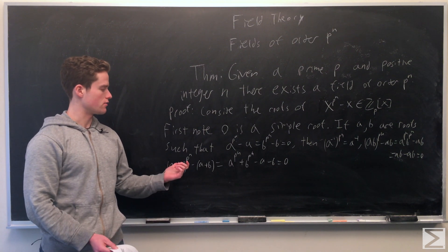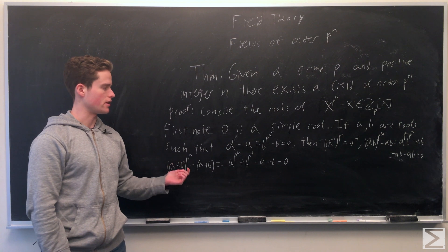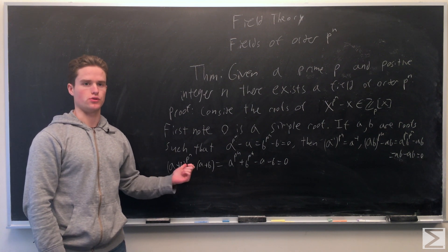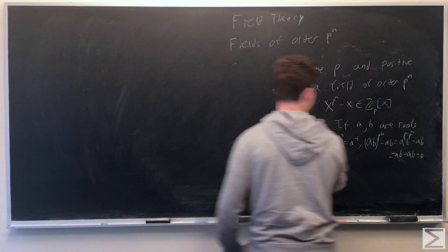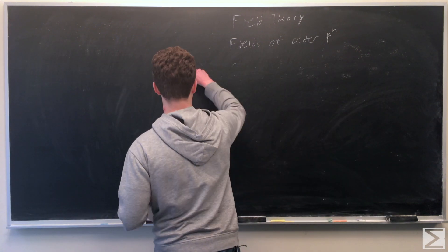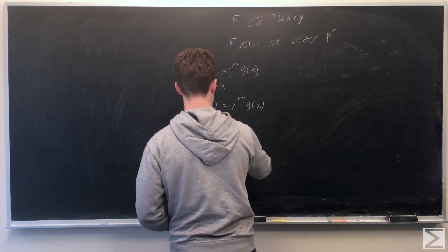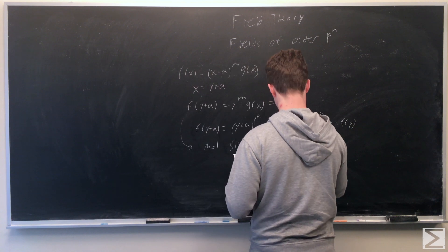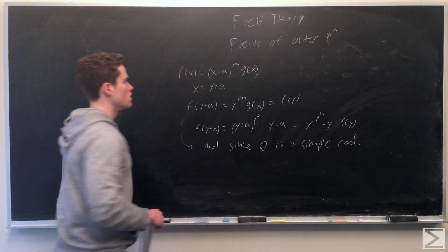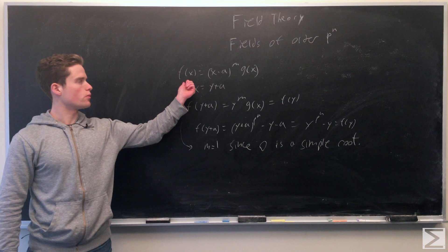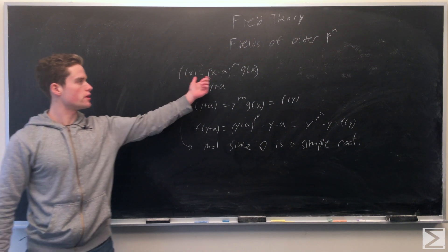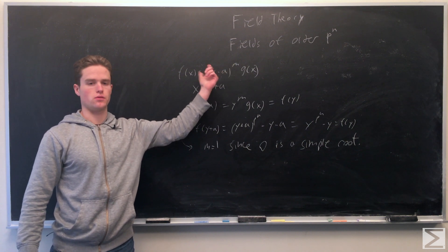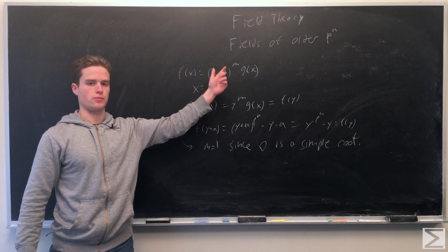This shows the roots are closed under inverses, addition, and multiplication. Now we just need to show that the roots are unique — each root has some multiplicity and we want to show the multiplicity is in fact one; there are no double or triple roots.